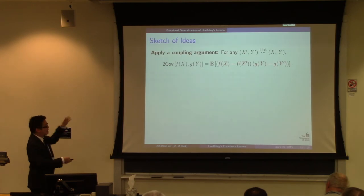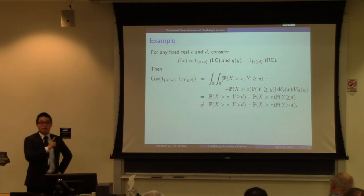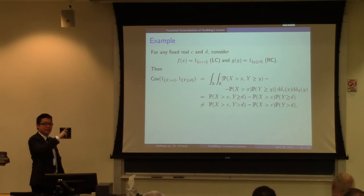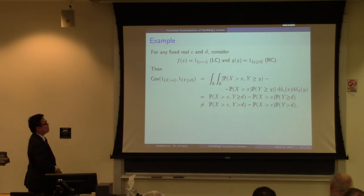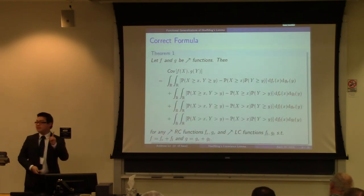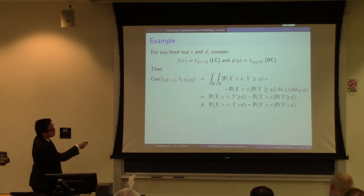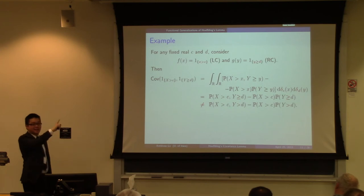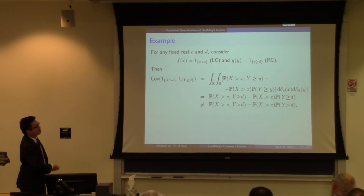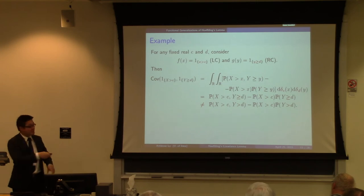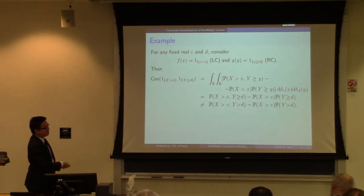I will go to an example which also shows why the formula in the literature is not correct. It is the simple case when f and g are just non-decreasing indicator functions — one left-continuous, one right-continuous. When we apply the correct formula, and since f and g are already right-continuous or left-continuous, there is no need to decompose them, so we have just one term. Because they are indicator functions, the induced measures are simply Dirac measures concentrated at points c and d. Integration with respect to Dirac measures means evaluating the integrand at those points, so we simply substitute x = c and y = d to get the final answer.